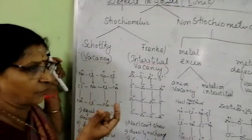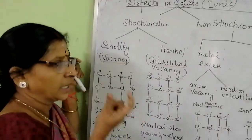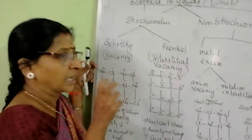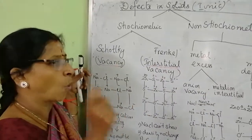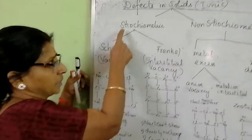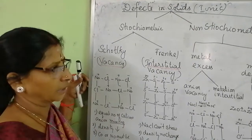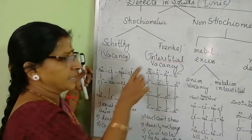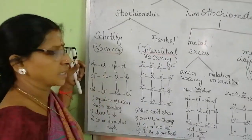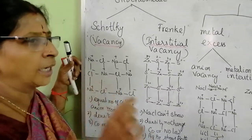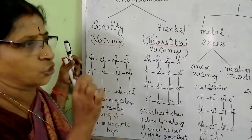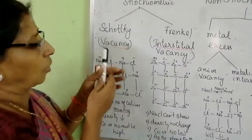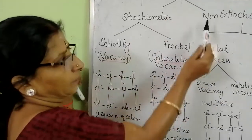Stoichiometric — the word itself is saying. Ionic solids will have cation and anion, and their ratio is in whole number. That is called stoichiometric. For example, NaCl, CeS, CeO — they are all in whole number ratio. Cation and anion ratio is in whole number, so they are called stoichiometric defects.